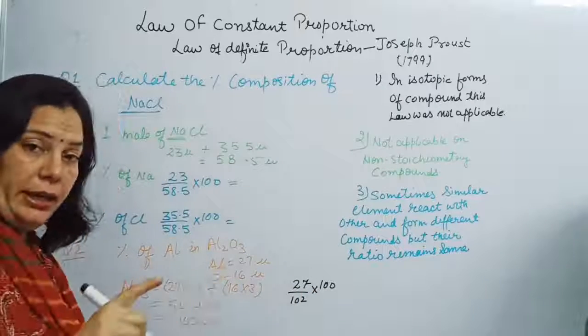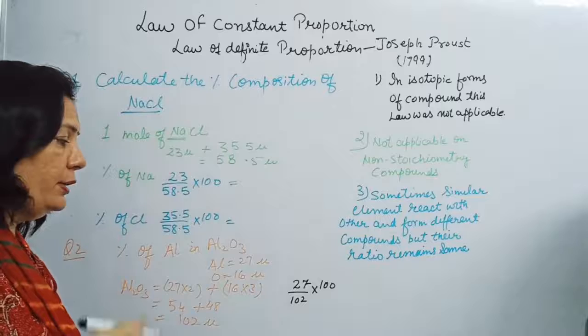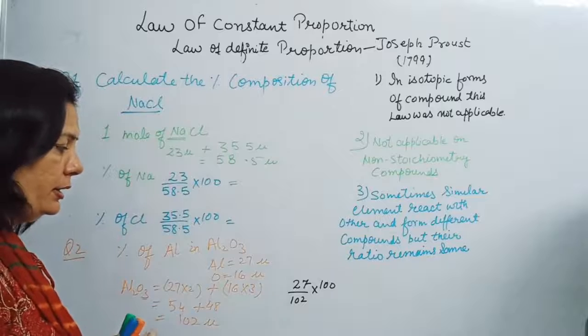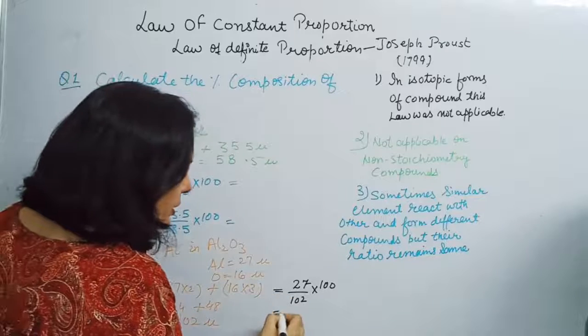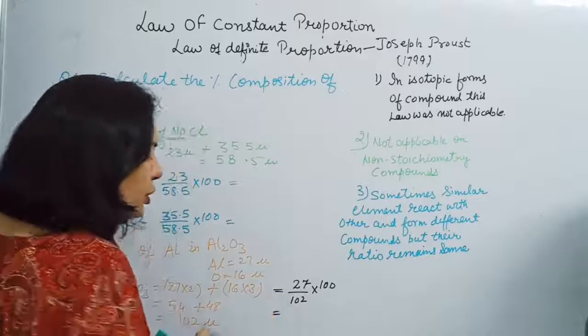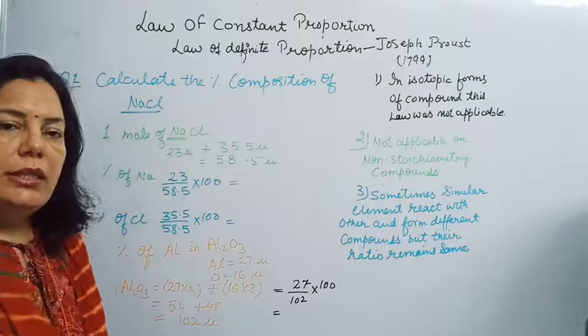Percentage of aluminium in aluminium oxide = (27 / 102) × 100. For Al2, you take double that value. You can calculate this with the formula: individual atomic mass contribution divided by total molar mass, multiplied by 100.